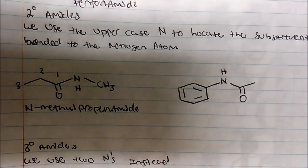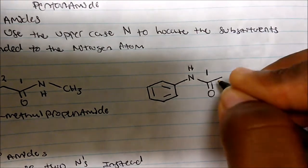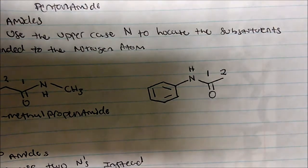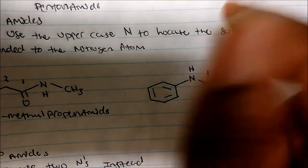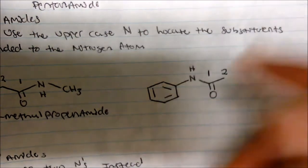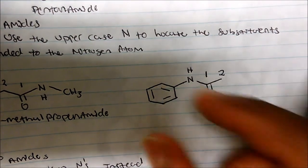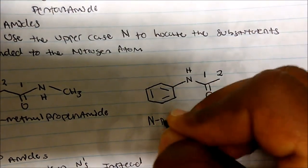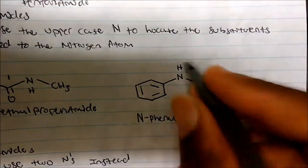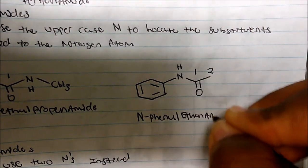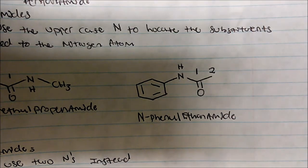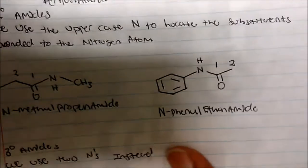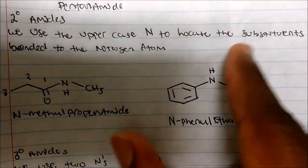For the next example, the longest continuous carbon chain starting from the carbonyl is one, two — so this is ethanamide. On the nitrogen I have a phenyl substituent, so I give it an N and write N-phenylethanamide. Nothing difficult as long as we follow the rule of writing N and listing the substituent on the nitrogen.